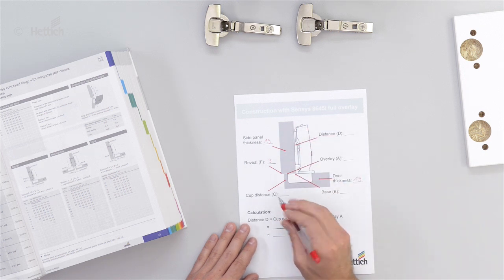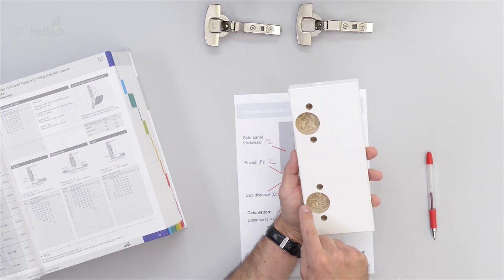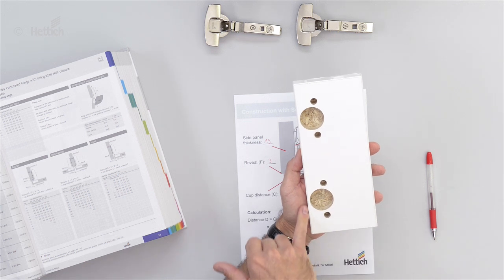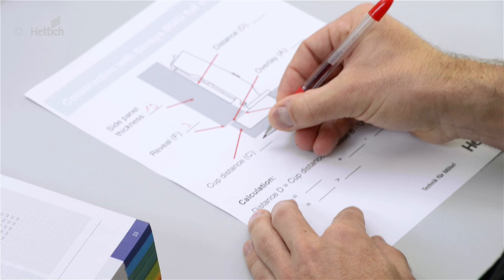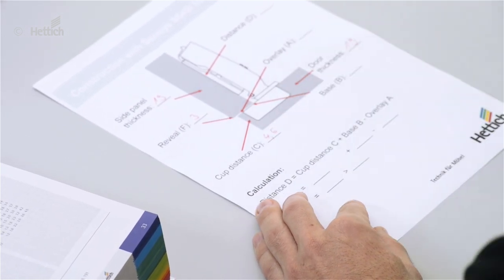Also the cup distance C, which is the distance between the hinge cup drilling and the edge of the door, is 4.5mm in this example.